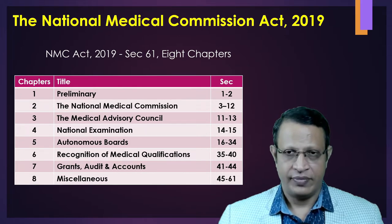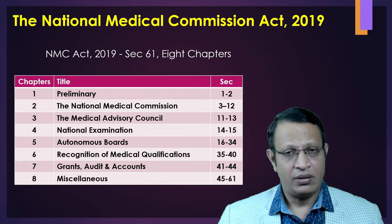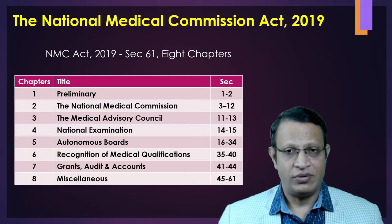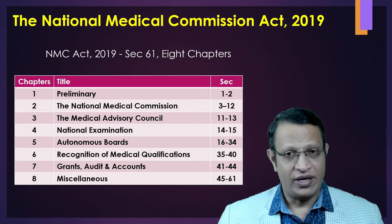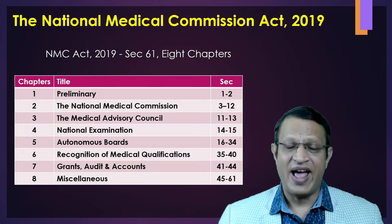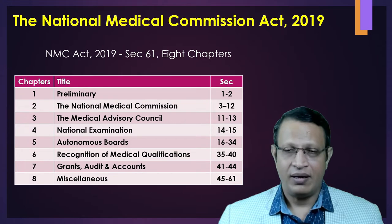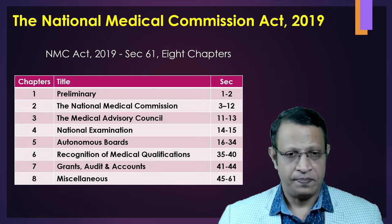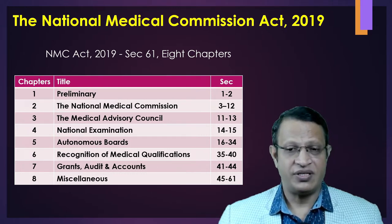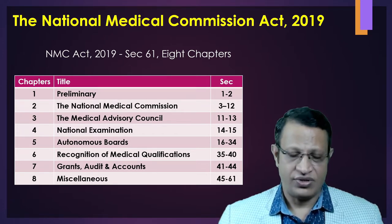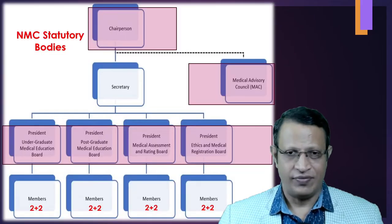Let's look into the chapterization of this legislation. The NMC Act 2019 has 61 sections and 8 chapters. Chapter 1 is preliminary, discussing the preamble and definitions. Chapter 2 covers the National Medical Commission from section 3 to 12. Chapter 3 covers the Medical Advisory Council from section 11 to 13. Chapter 4 covers national examinations from section 14 to 15. Chapter 5 covers four autonomous boards from section 16 to 34. Chapter 6 covers recognition of medical qualifications from section 35 to 40. Chapter 7 covers grants, audit and accounts, and the miscellaneous from section 45 to 61.